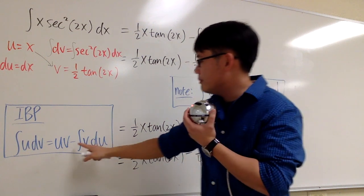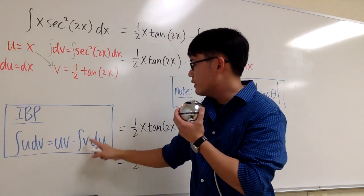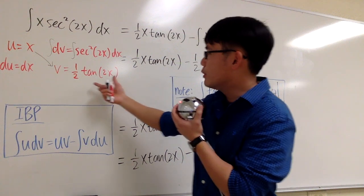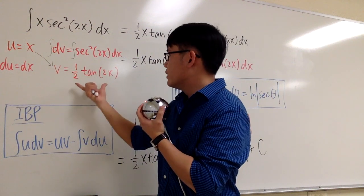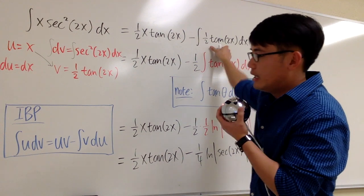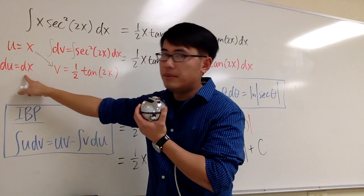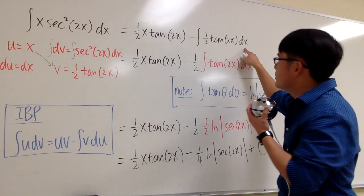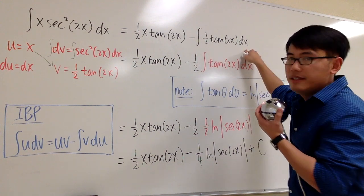Minus the integral, right? Minus the integral v du. It's pretty much the product of this row. v is this. So I put this down right here. 1 half tangent of 2x. And then du is the same as dx. So we have it right here. And we still have to work out this integral.